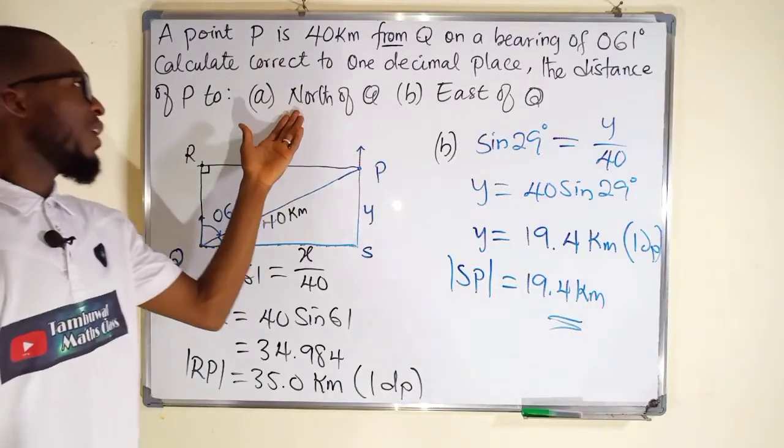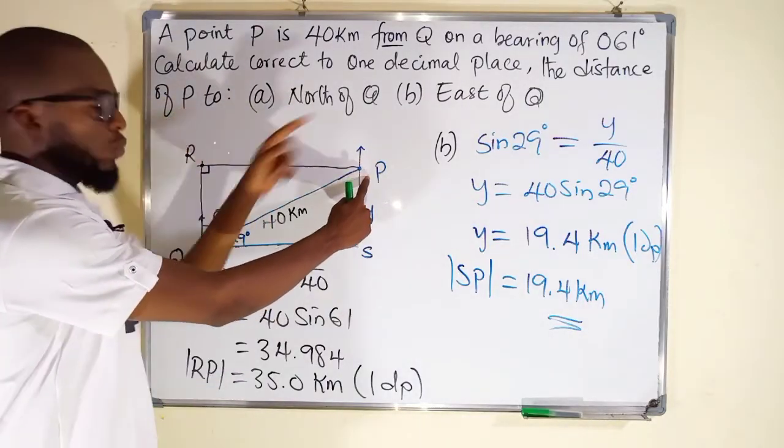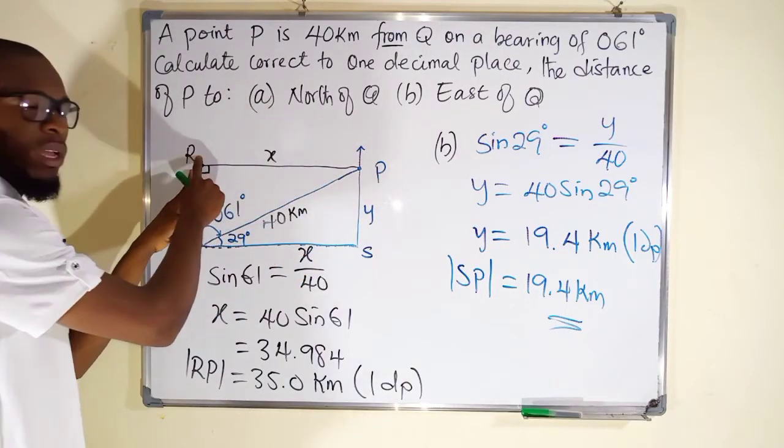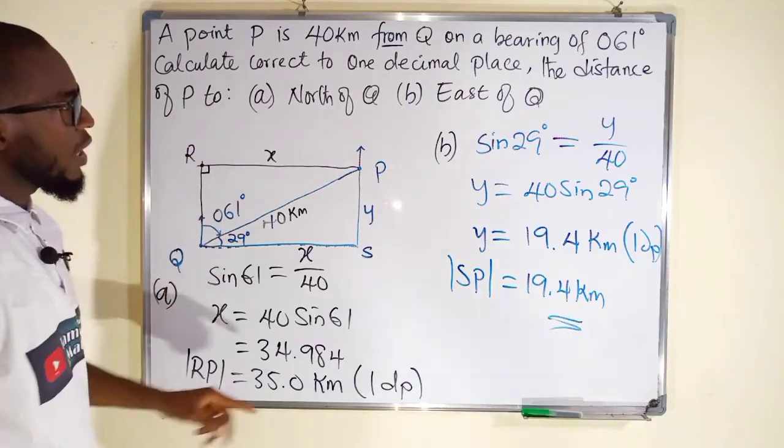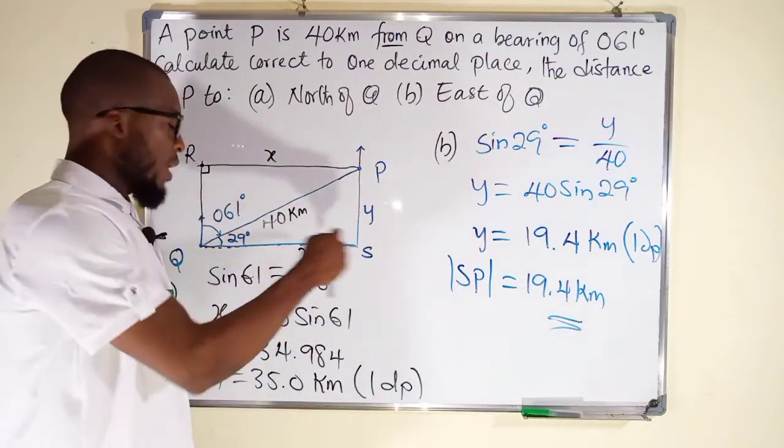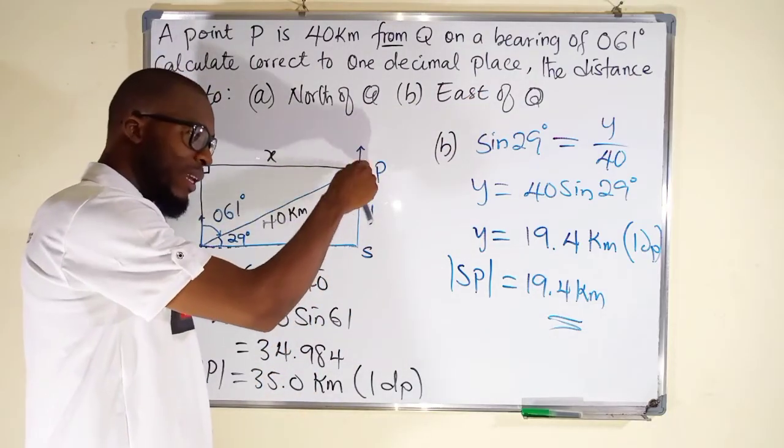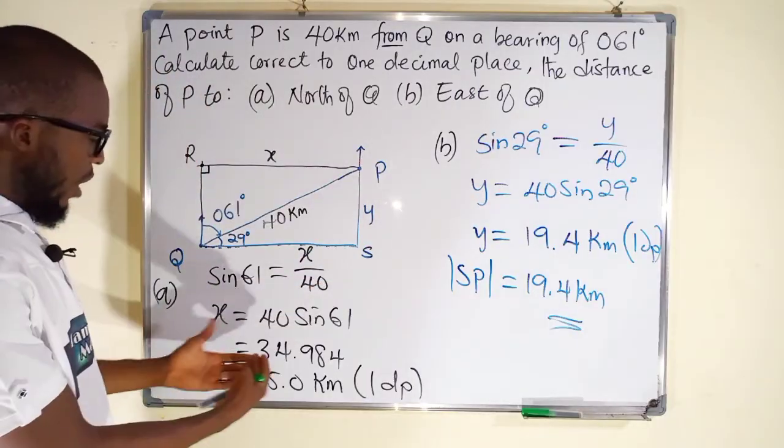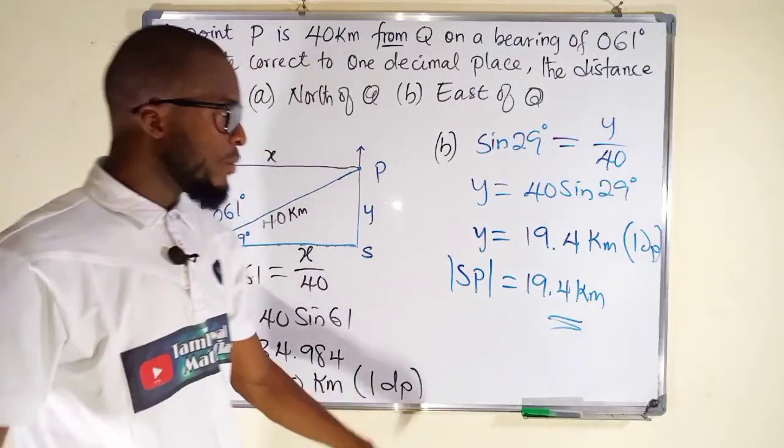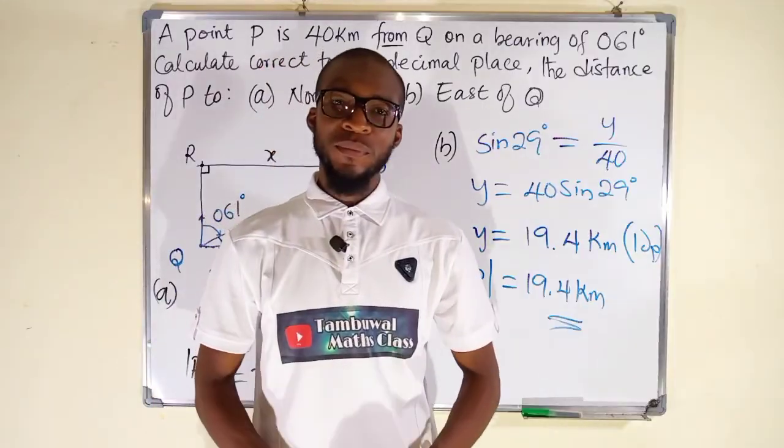The first question, we are asked to find the distance of P. This is P to the north of Q. And this is Q and this is north of Q. So the distance from here down to the north of Q. And the other one, we are asked to find the distance of P to east of Q. And this is Q. This is the east of Q. So we want to find the distance from here down to the east of Q. And we have them as 35 and 19.4 respectively. And this is all I have for you today. Thank you for watching. Do have a nice day. Bye.